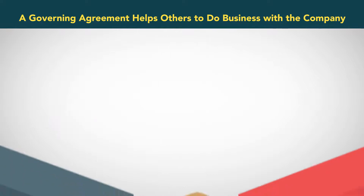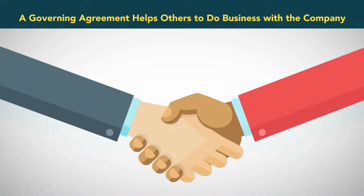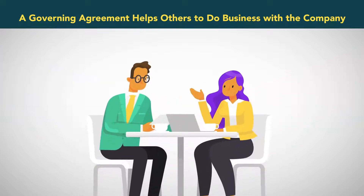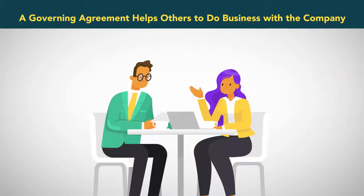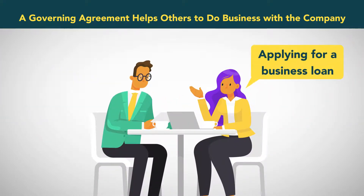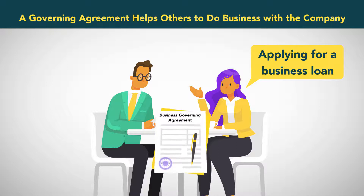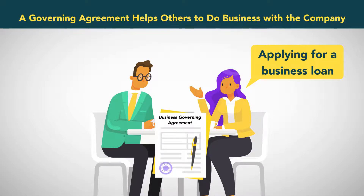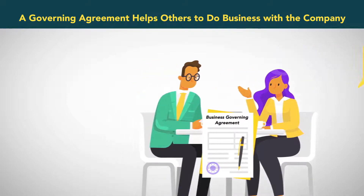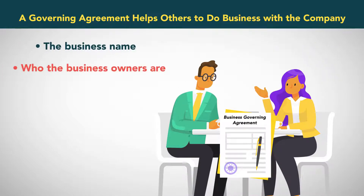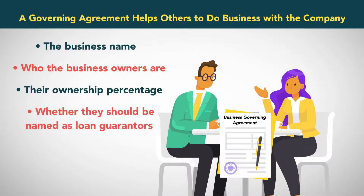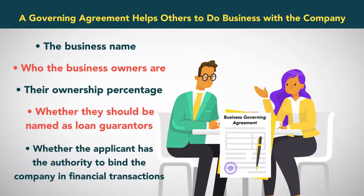A third reason is that a business governing agreement helps others do business with the company. If there arises a need to obtain assistance with a company's operation, such as applying for a business loan, many lenders will ask for a copy of the governing agreement and other documentation to verify information such as the business name, who the business owners are, their ownership percentages, whether they should be named as loan guarantors, and whether the applicant has the authority to bind the company in financial transactions.